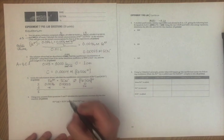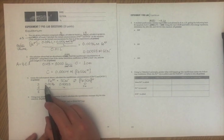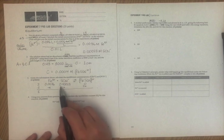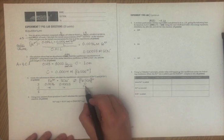And at equilibrium, we're going to have 0.0036 minus x, 0.00023 minus x, and x over here.